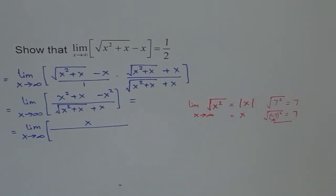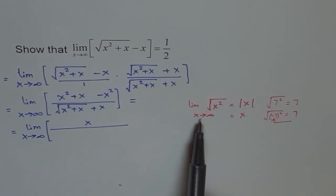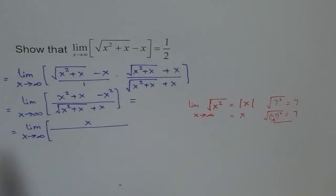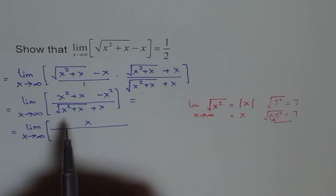Even if you make this mistake here you might still get the right answer in this problem, but in a test if x is approaching negative infinity you would get negative one half instead — and that is a huge difference. So this distinction matters.